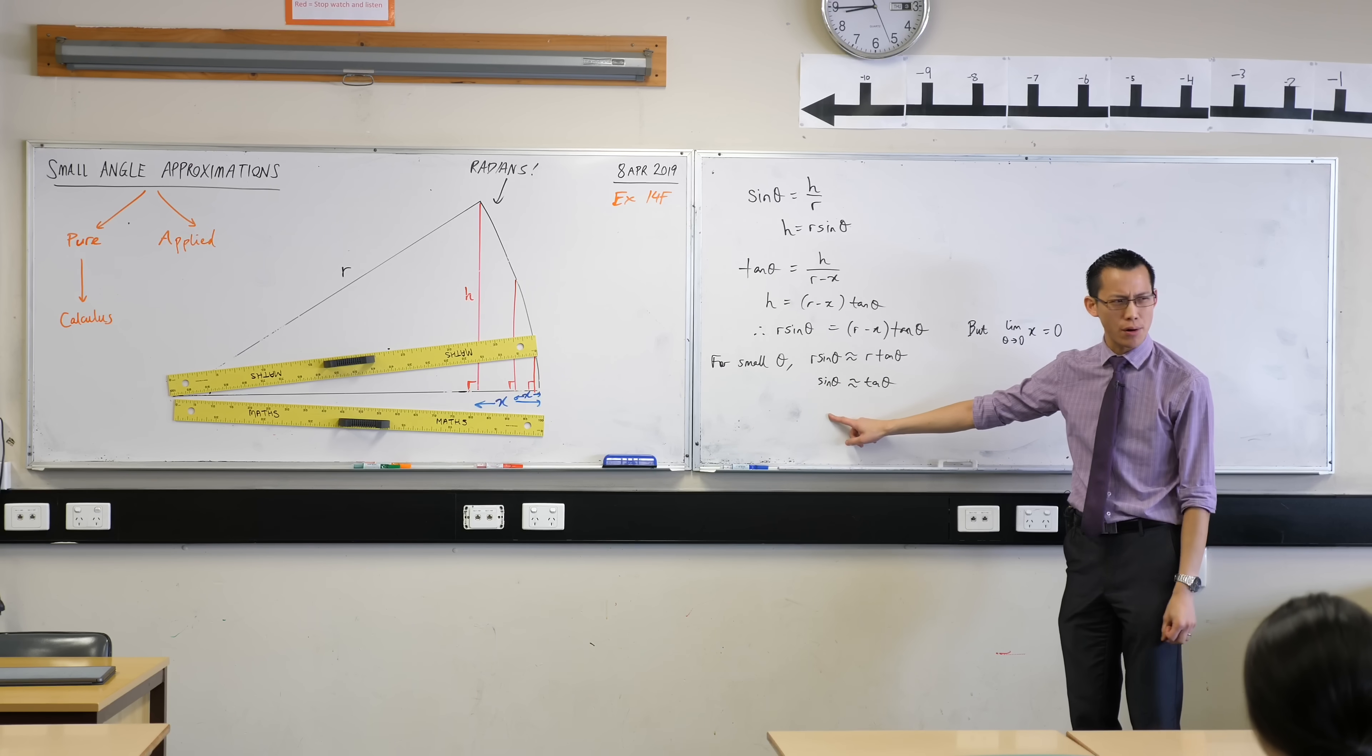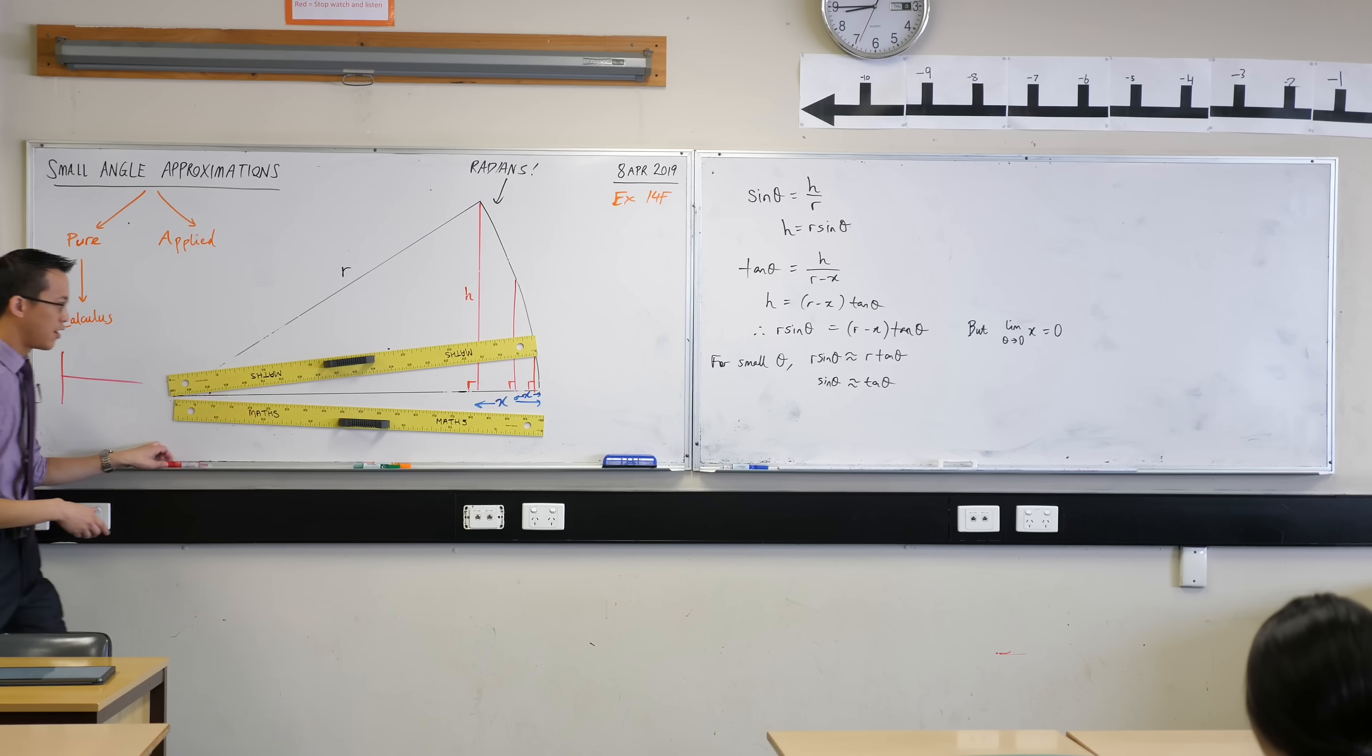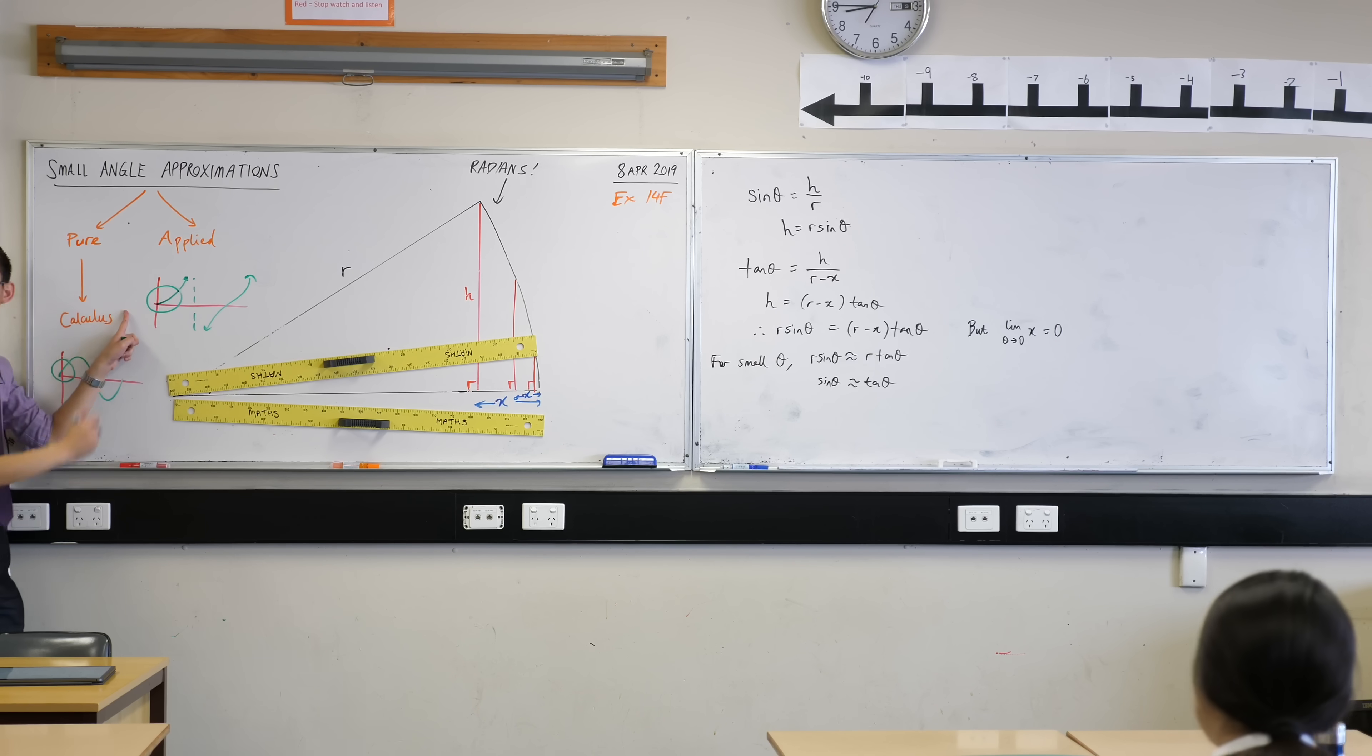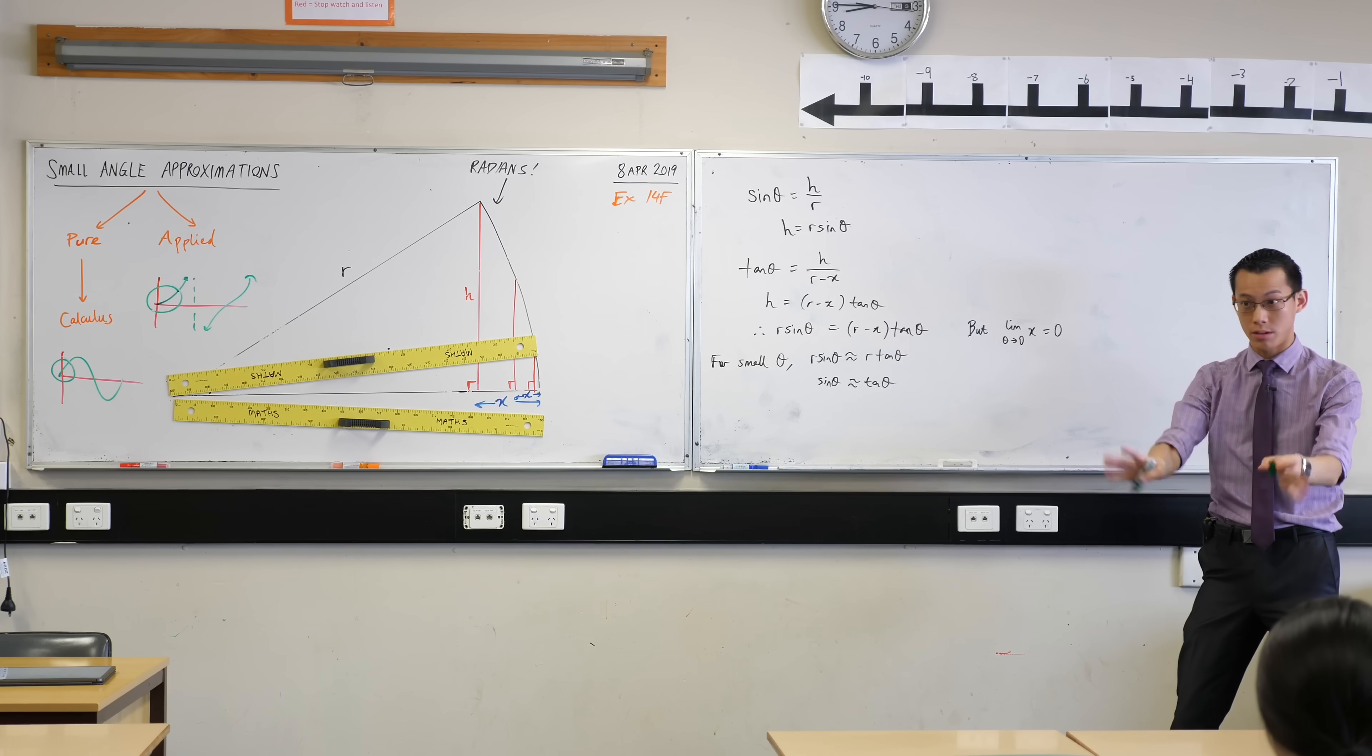What does sine theta actually approach when theta gets small? Think about the graph. What does sine theta approach when theta itself gets small? It also approaches zero. If you have a look at the graph there, as theta approaches zero, as it gets closer and closer into the origin, do you see that theta is getting to zero? So is sine theta. What about tan? Does tan approach when you are getting closer to zero? Same thing. Here's the graph. Actually not interested in this part over here, but this is just so you recognize it as tan. And as you can see, as theta gets closer and closer to zero in this little territory in there, you can see tan is getting closer and closer to zero. In other words, theta and sine and tan, they're all approaching zero. Does this make sense?